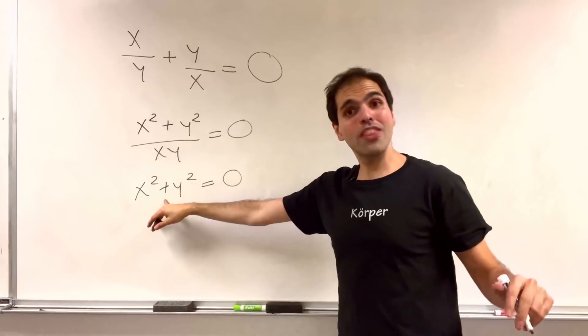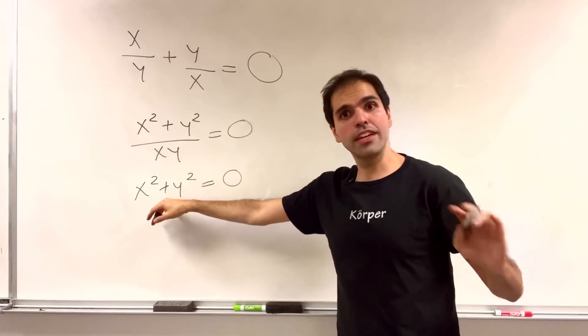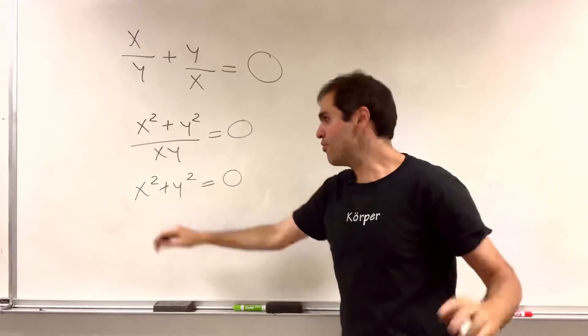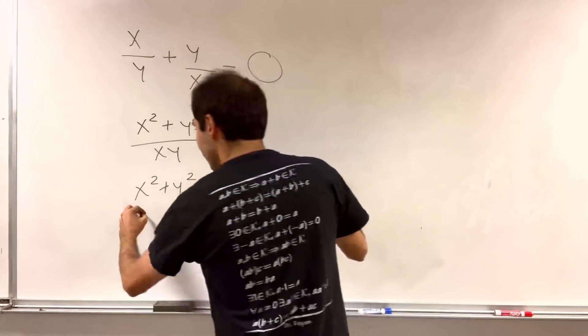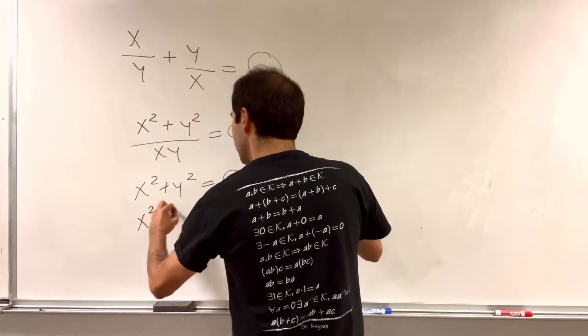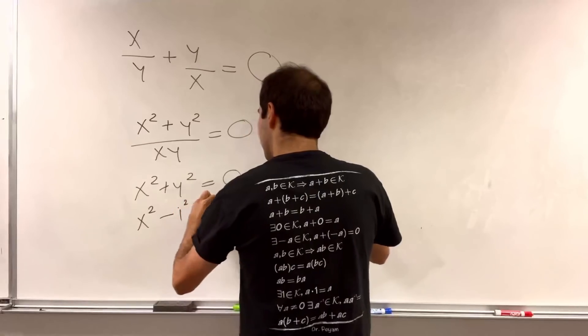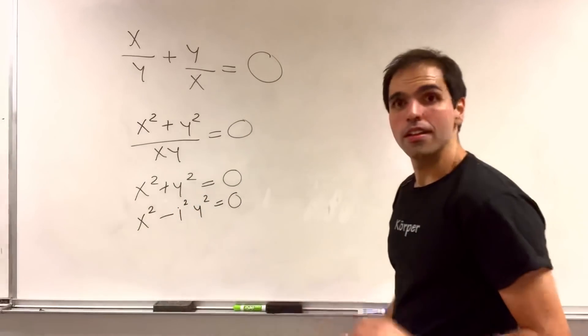But the cool thing is, in complex numbers, you can go a step further, because this is x squared minus i squared y squared equals 0.